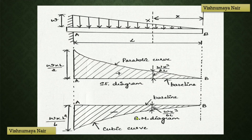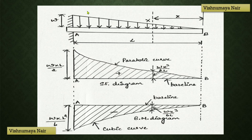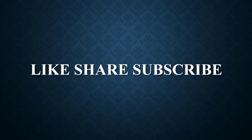This is the shear force and bending moment diagram of a cantilever beam of length L with a uniformly varying load over it. In the shear force diagram, the variation is represented using a parabolic curve, whereas in the bending moment diagram the variation is represented using a cubic curve. At section X, the shear force is Wx²/2L and the bending moment is Wx³/6L. By varying x, we can calculate the shear force and bending moment at every section along the beam. Please like, share, and subscribe. Thank you.